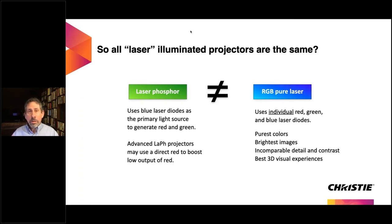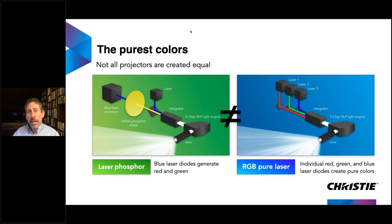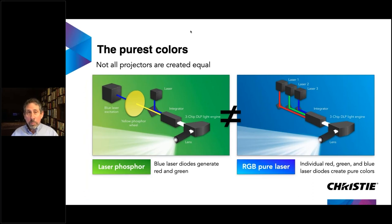Are all laser-illuminated projectors the same? People hear 'laser' and assume so, but a laser phosphor projector is not close to an RGB laser system. In laser phosphor, a blue laser hits a phosphor wheel that glows yellow; yellow splits into its components — red and green — then add a blue diode to get red, green, and blue. But it's not the best quality red or green. In a true RGB laser system, you're illuminating the projector with RGB lasers directly, going into the integrator rod.